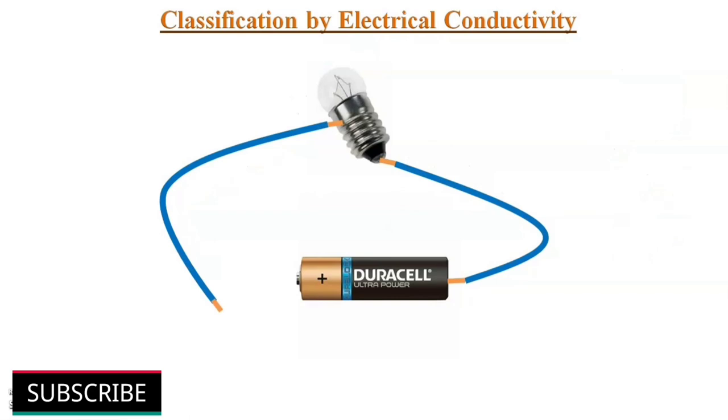Just remove any one connection. The bulb turns off immediately. But why? The reason is that the flow of electric current is not complete. We can say it as an open circuit. Due to this type of open circuit, some of the electrical appliances in our home don't work properly.